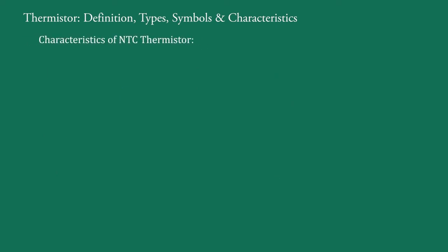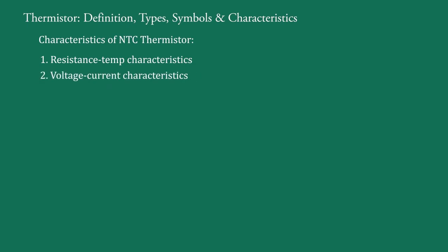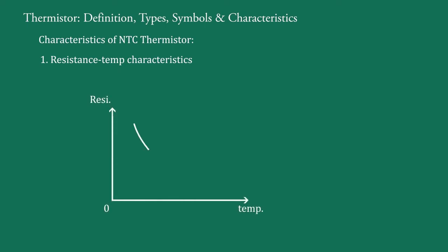Now we will discuss two types of characteristics of NTC thermistors: resistance-temperature characteristics and voltage-current characteristics. For the resistance-temperature characteristics of NTC thermistors: NTC thermistors are non-linear resistors. The resistance of the thermistor decreases exponentially as the temperature increases.